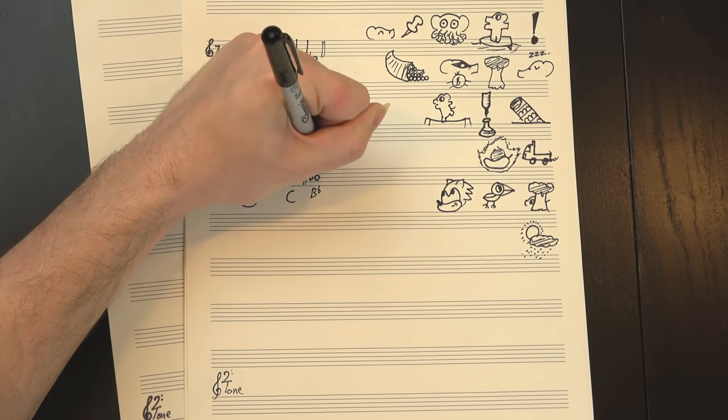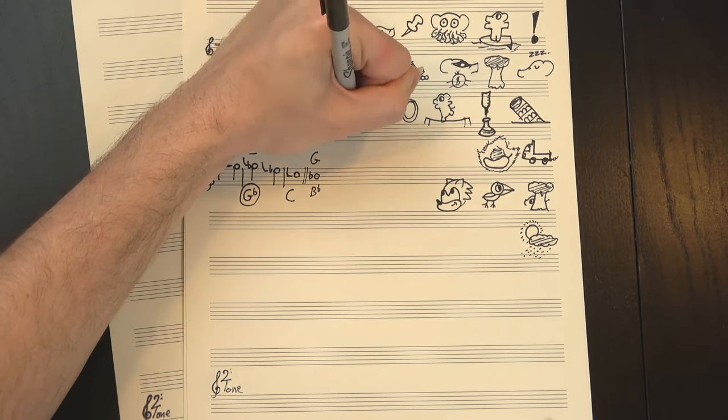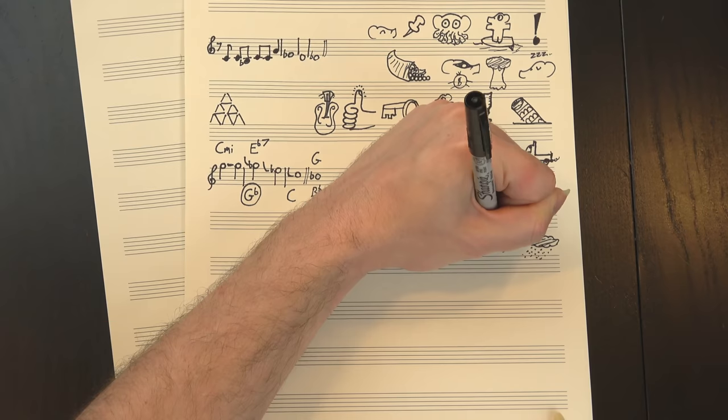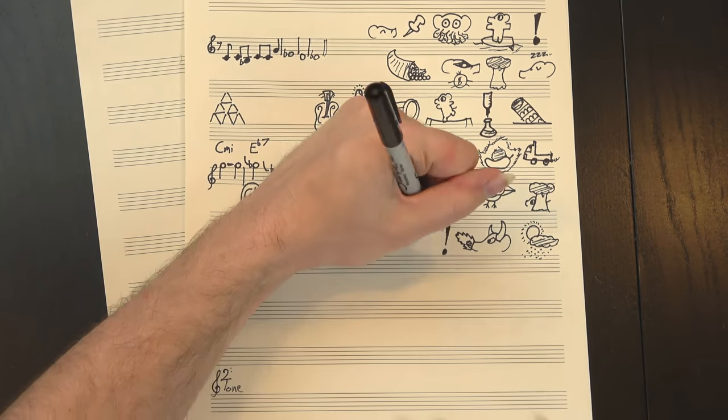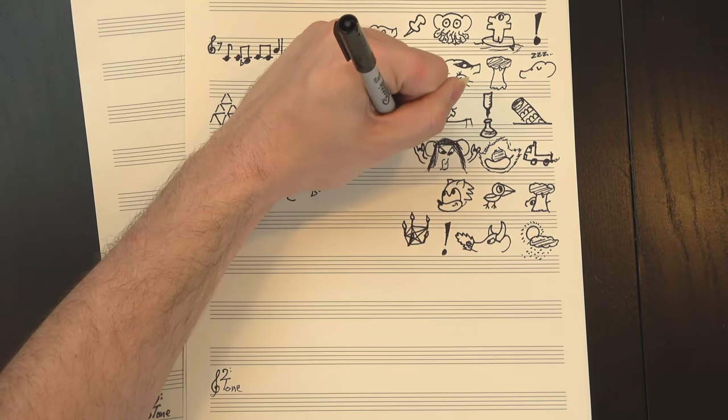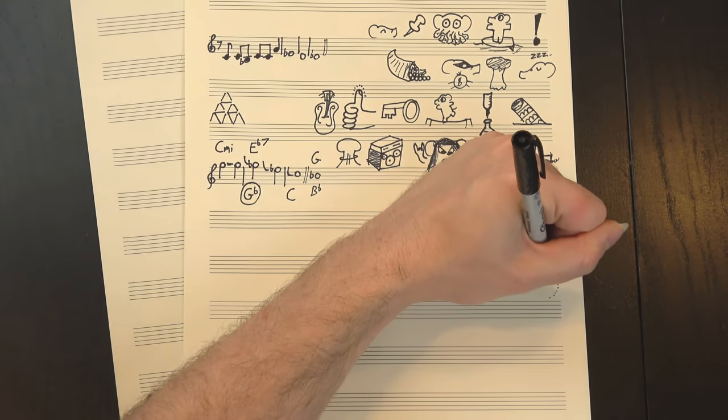Gb is a tritone away from C, though, so unlike the Bb over G major thing, where the note at least fit with the key, here the Gb just sticks out like a sore thumb. This is sort of a callback to the F-sharp in the main string riff, but honestly, I think it's mostly just a tritone for tritone's sake, which leads to one more potential influence: metal. Metal loves sticking random tritones in the middle of riffs, and if this same line was played in the lower register of a distorted electric guitar, it'd sound metal as heck.